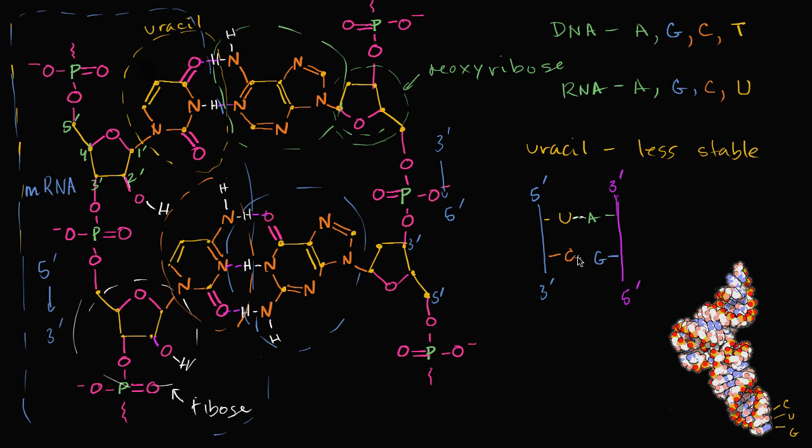And actually I'll do the hydrogen bonds in white. So there's multiple hydrogen bonds going on here. But just to be clear, this is mRNA, and on the right we have DNA, and this could be happening during transcription.